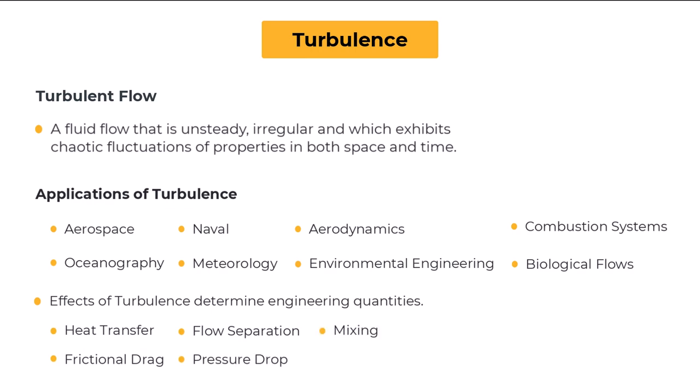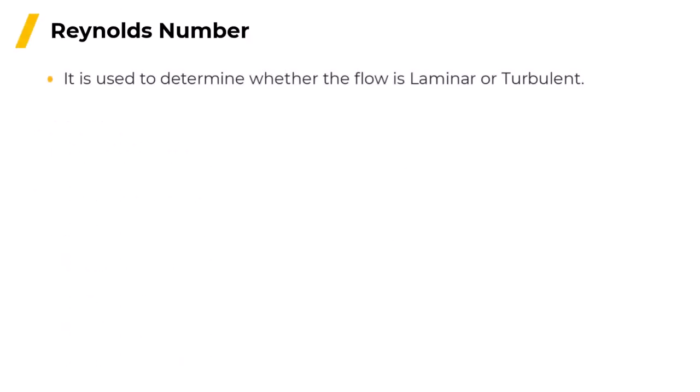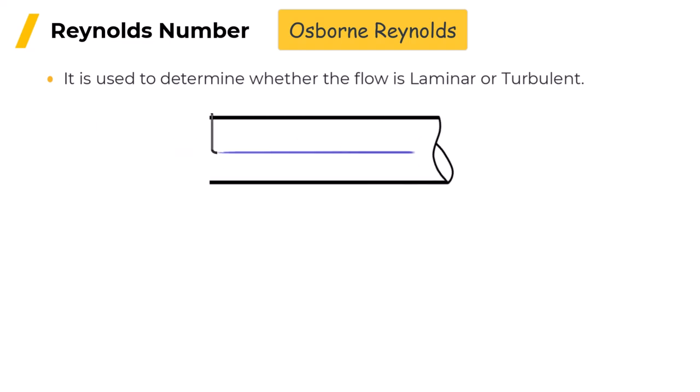In order to determine whether or not a flow is turbulent, we can use the Reynolds number, which takes its name from Osborne Reynolds, who performed the famous experiment depicted here on the screen. In the experiment, dye was injected into a pipe with water flowing through it. If the water was moving slowly, the dye just flowed along with the water. This is known as laminar flow.